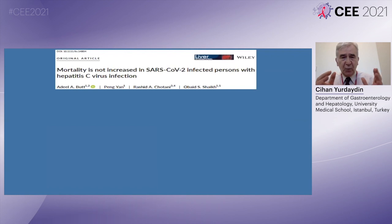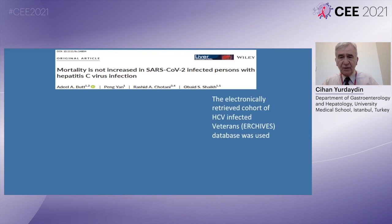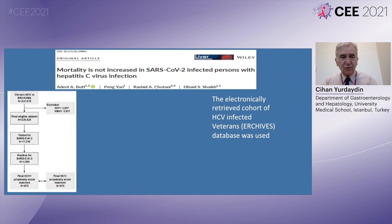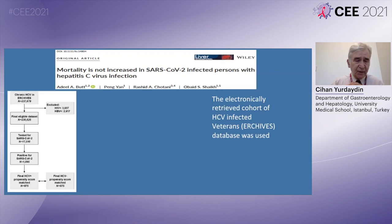Regarding HCV: I want to show one important study because there is not much published about hepatitis C and SARS-CoV-2 infection. Studies generally show that mortality is not increased. The electronically retrieved cohort of HCV-infected veterans database was used in this study — based on around a quarter million HCV patients. Among those tested for SARS-CoV-2, there were 1,000 patients with SARS-CoV-2 and HCV, and finally 907 patients were propensity score matched with 975 patients without HCV.